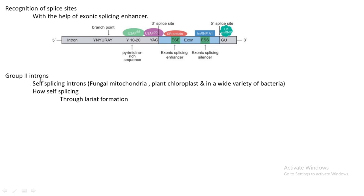Next I am going to tell you about a type of intron called group 2 introns. What is their speciality? They can splice themselves — they have the self-splicing property. Group 2 introns are usually found in fungal mitochondria, plant chloroplasts, and in a wide variety of bacteria. They do this self-splicing through a lariat formation. A lariat is a trap-like structure, similar to those used by cowboys to catch runaway cows.